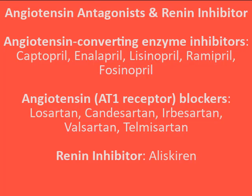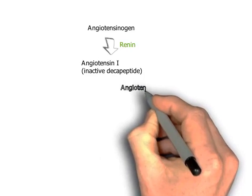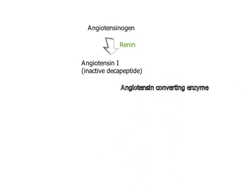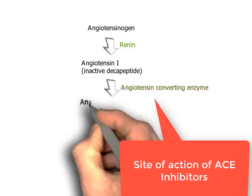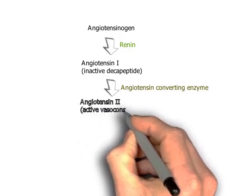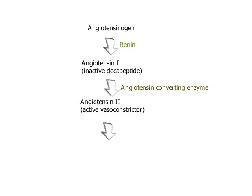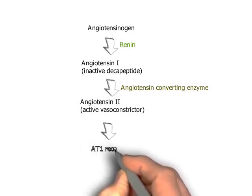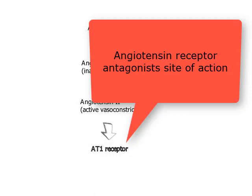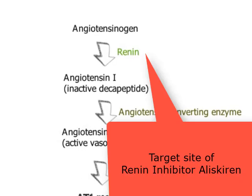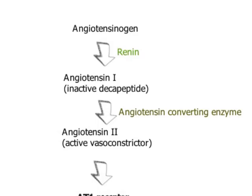The next category is angiotensin antagonists and renin inhibitors, comprising two groups: ACE inhibitors and angiotensin 2 receptor blockers (ARBs). ACE inhibitors — captopril, enalapril, and ramipril — inhibit angiotensin converting enzyme, which is responsible for conversion of angiotensin 1 to the powerful vasoconstrictive agent angiotensin 2. ARBs — losartan, candesartan, irbesartan, and valsartan — competitively inhibit angiotensin 2 at its AT1 receptor sites. The renin inhibitor aliskiren is the first orally effective direct renin inhibitor, binding to the active site of renin to prevent formation of angiotensin 1.